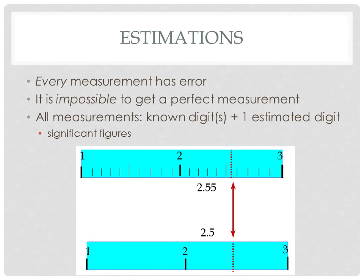A question that might come up: what if I think this line isn't quite halfway between — could I say two point five four? Would that be a correct measurement? Absolutely, it would be. In fact, if you look at this line, it looks like the dotted line is actually slightly closer to two point five than two point six. So I might say two point five four, and that would be a good measurement.